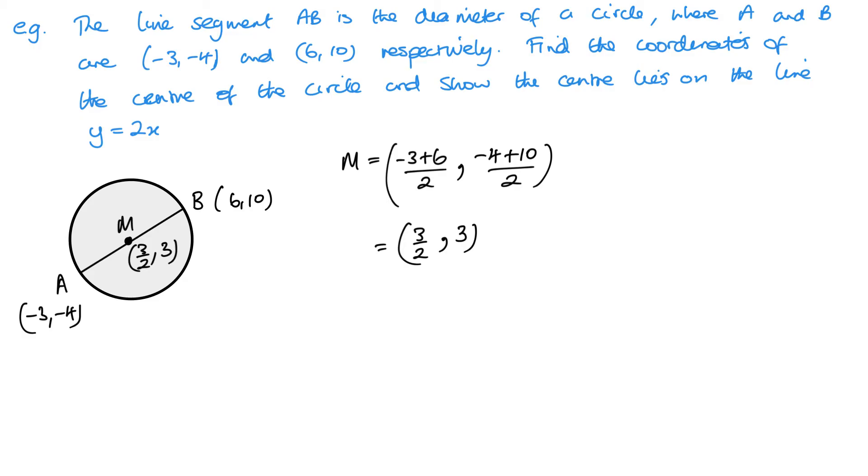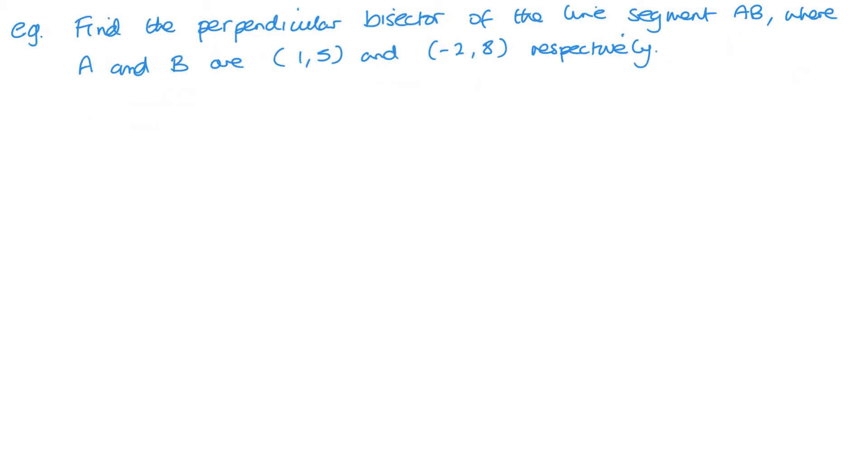Now, for the second part of the question, it wants me to show that the centre lies on the line y equals 2x. So, if I think about the line y equals 2x, if I look to substitute in x equals 3 over 2, then I get 2 times 3 over 2, which is going to be 3. Now, that clearly shows that the midpoint appears on that line.